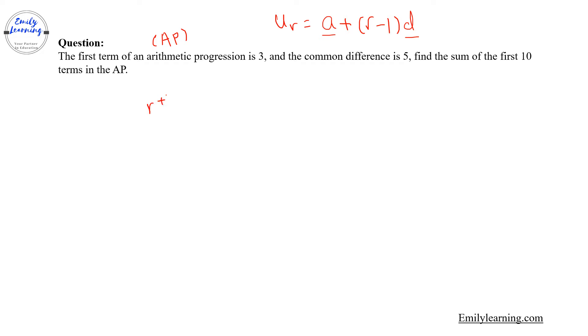So based on this example, the r-th term u_r will be equal to a, which is the first term and is 3, plus (r minus 1) times the common difference, which is 5.